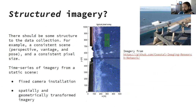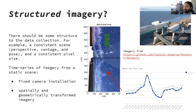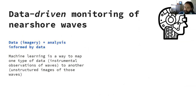Structured imagery seems to be a key requirement for a lot of these methods: fixed cameras, a fixed vantage, a fixed perspective, and constant pixel size when you rectify the image. Various methods have been proposed for wave speed, wave height, wave direction, and so on, using arrays that look at the intensity of one pixel over time, the intensity of pixels in groups, grids, or lines. They all require some spatial and geometric transformation of the imagery.